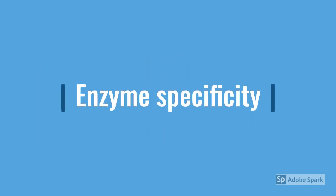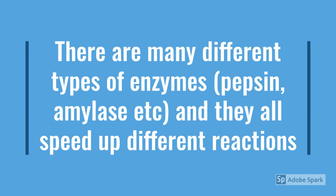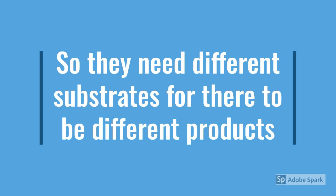Enzymes are extremely unique and there are various different types — pepsin, for example, which is found in your stomach, amylase, and of course catalase. The different types of enzymes all have to speed up different types of reactions. For example, whilst catalase speeds up the degradation of hydrogen peroxide, pepsin catalyzes the degradation of proteins in your food. So if they speed up different reactions, their substrates will have to be different too — in pepsin's case, the substrate is protein.